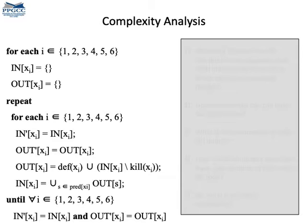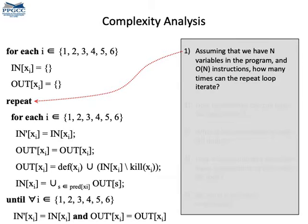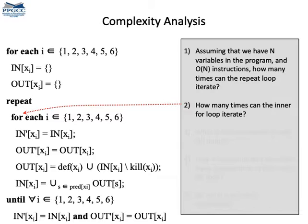To figure out the complexity of this algorithm, let's try to answer five questions, one at a time. First, assuming that you have N variables in the program and about the same number of instructions, how many times can this first loop iterate? You may try to answer it. I will provide an answer later. And how many times can this inner loop iterate? This should be an easy question. I'm considering here that example with the six program points, but we can imagine that here I have as many points as I have instructions in the CFG of the program.